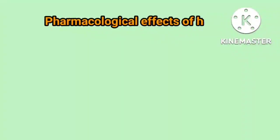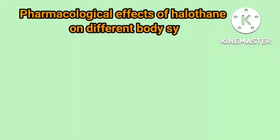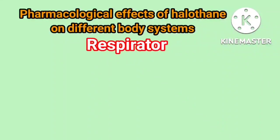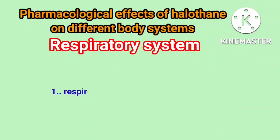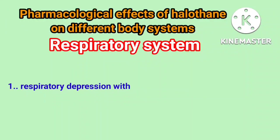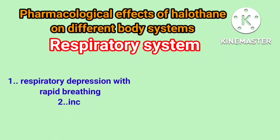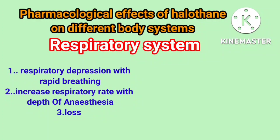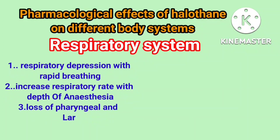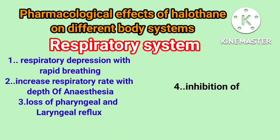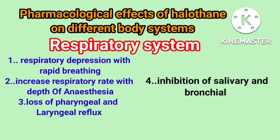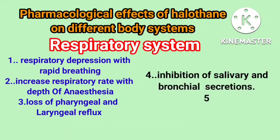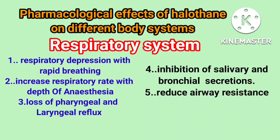Pharmacological effects of halothane on different body systems. First, the respiratory system: it causes respiratory depression with rapid breathing, and increased respiratory rate with depth of anesthesia. There is loss of pharyngeal and laryngeal reflexes, inhibition of salivary and bronchial secretion, reduced airway resistance, and relaxation of smooth bronchial muscle.